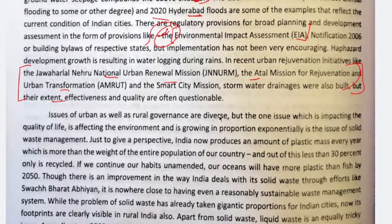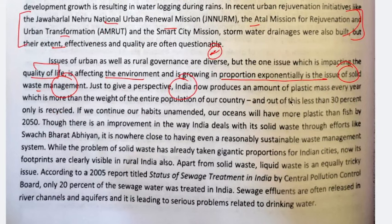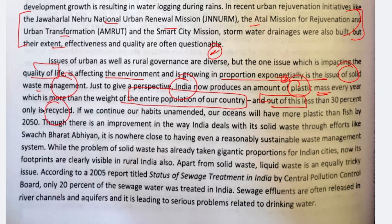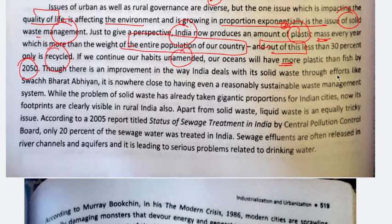The issues of urban as well as rural governance are diverse. But one issue that is impacting quality of life, affecting the environment, and growing exponentially is solid waste management. India produces so much plastic every year — more than the weight of the entire population of the country — and less than 30% of it is recycled. The rest ends up in our environment. If we continue these habits unamended, by 2050, our oceans will have more plastic than fish, it is said.